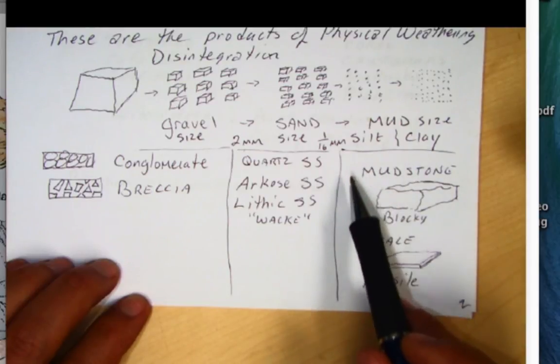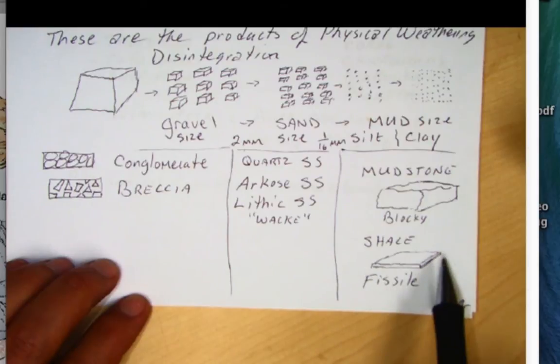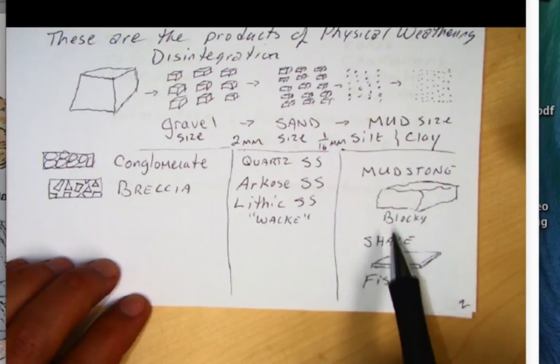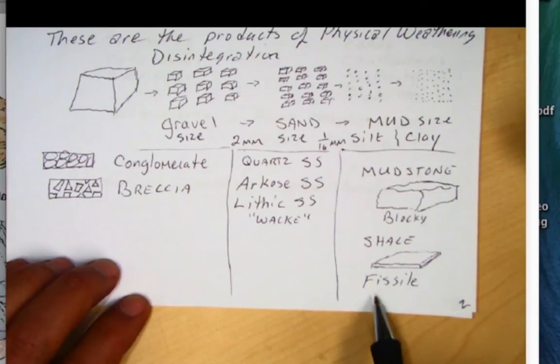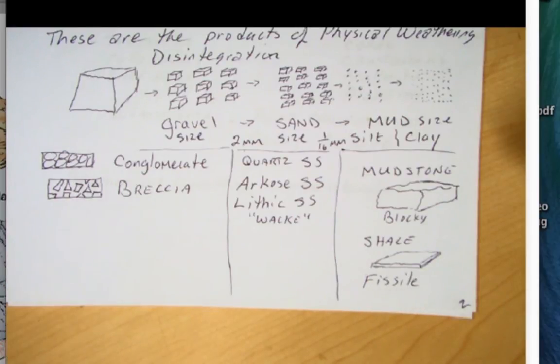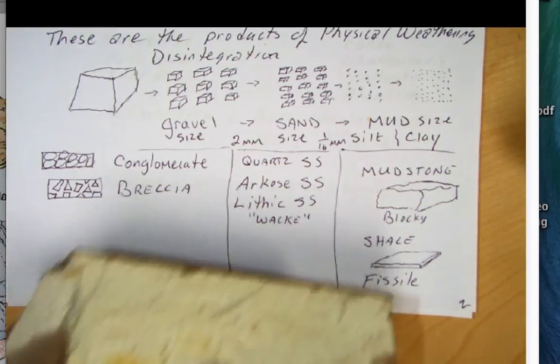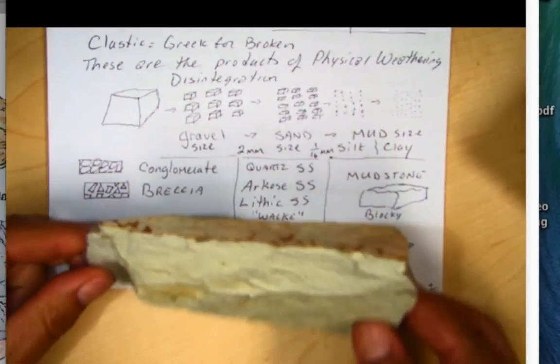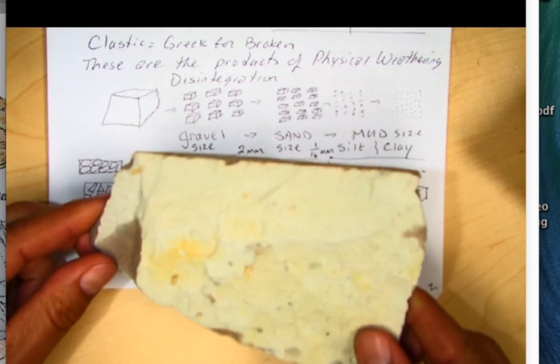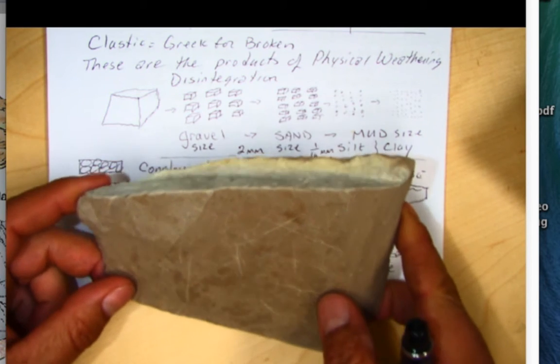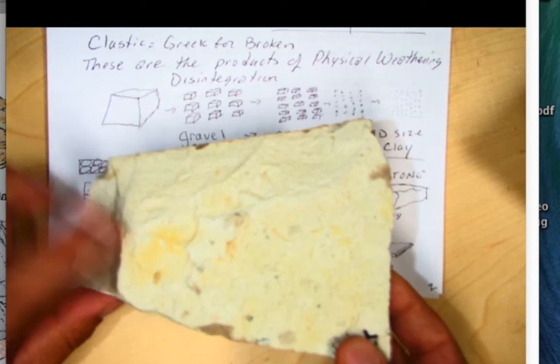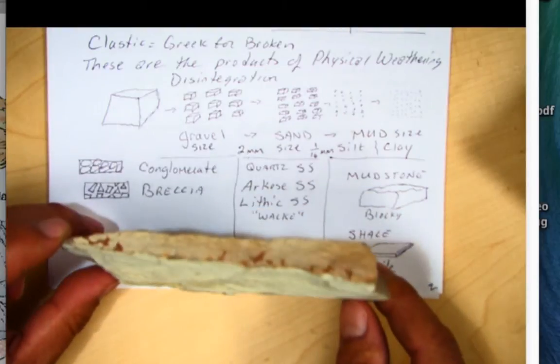Now if we look at the sedimentary rocks that are in the mud size category, there is something called mudstone and something called shale. Mudstone is blocky, it's more massive. Whereas shale is said to be fissile. And fissile means it's layered or flat like a pancake. And so in fact, here I have the famous Monterey shale. And the Monterey shale, you can see it's very thin. This is a famous formation in California that's a source of hydrocarbons, petroleum. We'll talk more about this Monterey formation in a moment. But here is a shale, fissile.